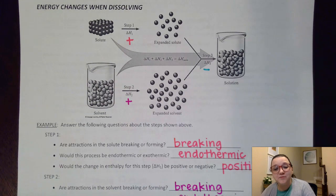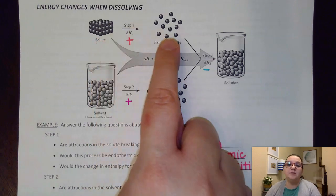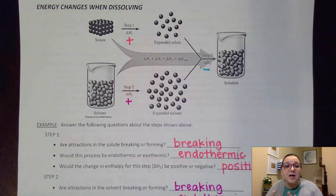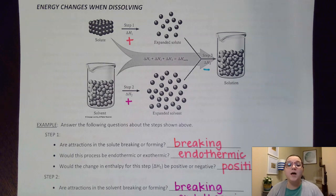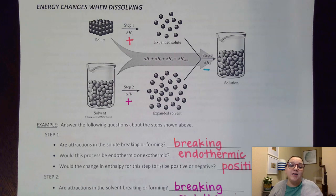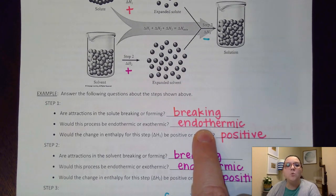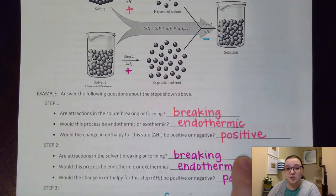Let me show you what I put for my answers for those three steps. In step one, I noticed that I've got to separate out my solute, so what that means is that I want to break attractions in that step. Depending on what kind of solute I have would depend on what kind of attractions I would be breaking. For example, if I had an ionic solute, then I would want to break apart the ionic bonds. If I had a covalent solute, then I would only need to break apart the IMFs that were there. And when I break those apart, it takes energy to break, and so therefore that step would be endothermic, which means that step has a positive heat change.